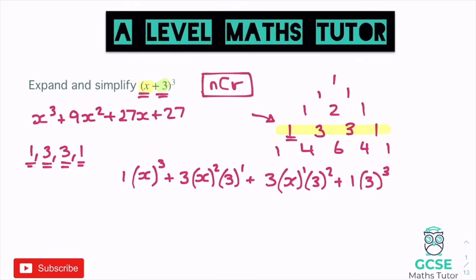Expanding all of this out: one lot of x³ is just x³. Then three lots of x² times three — three times three is nine — gives us 9x². For the next piece, we have three lots of three squared times x: three squared is nine, times three is 27, so that gives 27x. And at the end, one lot of three cubed is 27. So we get x³ + 9x² + 27x + 27, which matches what we got from expanding the triple bracket.